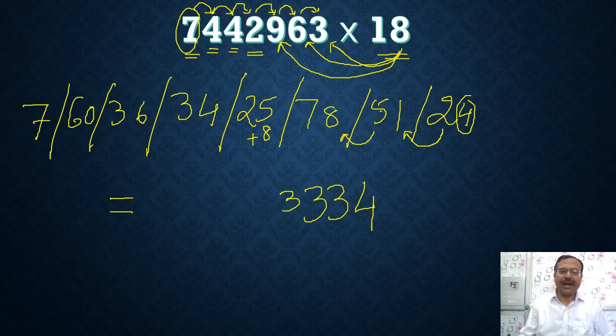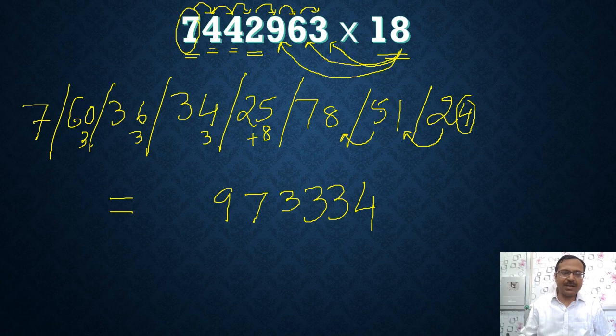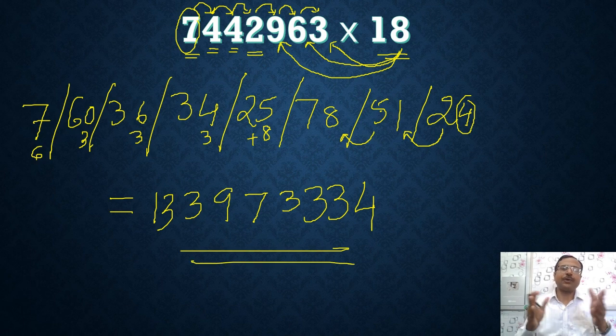33 means 3 and 3 carried. 34 plus 3 is 37. So 7 and 3 carried. 39 means 9 and 3 carried. 63 means 3 and 6 carried. And 7 plus 6 is 13. So for me, the answer for the question is 133973334.